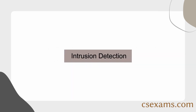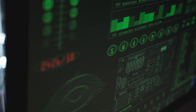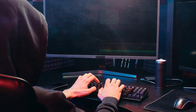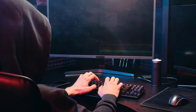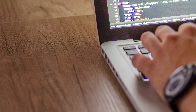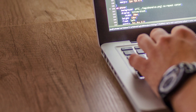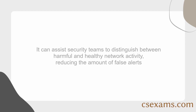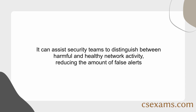Intrusion Detection Systems (IDS) are used in cybersecurity to protect against external attacks. However, they are not perfect and can often be fooled by attackers. Deep learning can be used to improve IDS performance by providing a more accurate way to detect attacks. By analyzing traffic with more accuracy, deep learning, convolutional neural networks, and recurrent neural networks (RNNs) can be used to construct smarter IDS-IPS, helping security teams distinguish between harmful and healthy network activity, reducing the amount of false alerts.